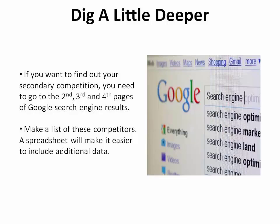To find the secondary competition, you need to dig a little deeper. Go to the second, third, and fourth pages of the Google search results. See which of these results are for other businesses. Make a list of your competitors — a spreadsheet will make it easier to include additional data, which you'll find using the following steps.